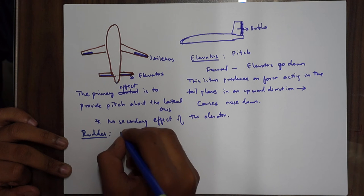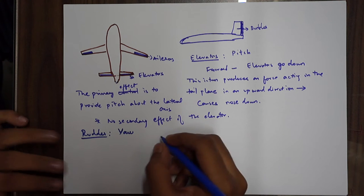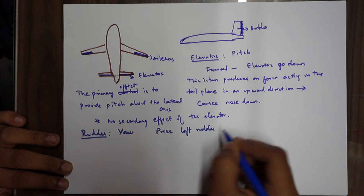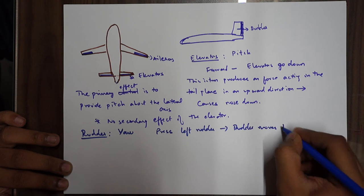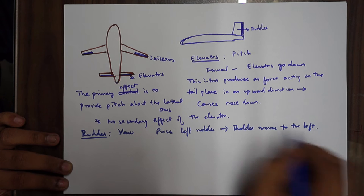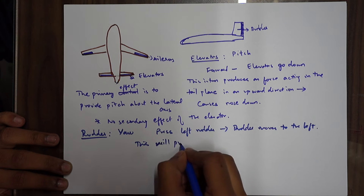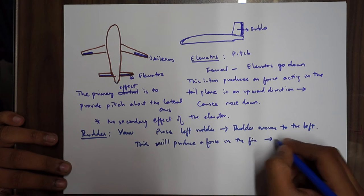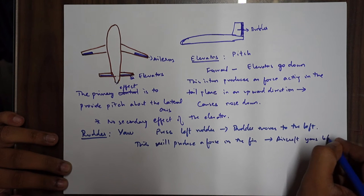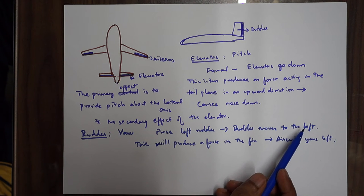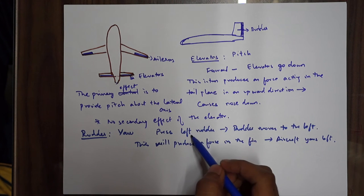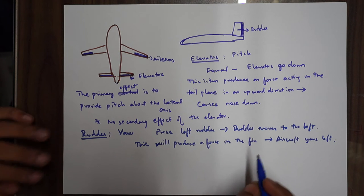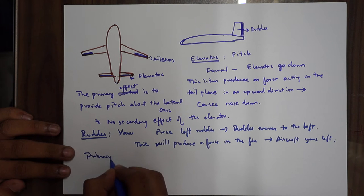Now the rudder gives you yaw, as we discussed. If you press the left rudder, the rudder moves to the left. This will produce a force on the fin from the right, and the aircraft yaws to the left. So left rudder moves to the left, and the force on the fin makes the aircraft yaw to the left.